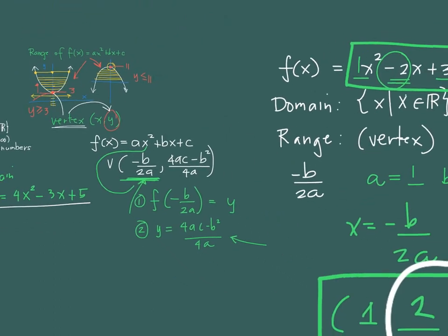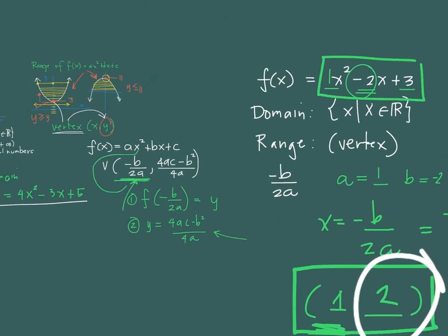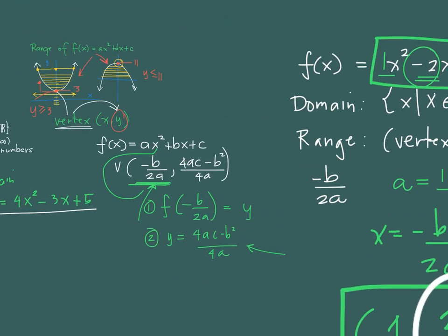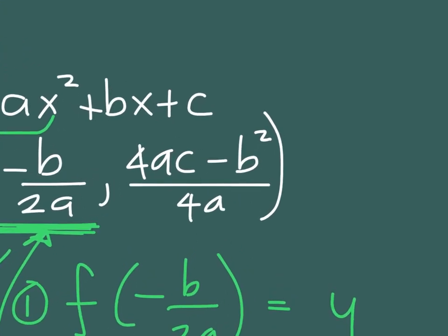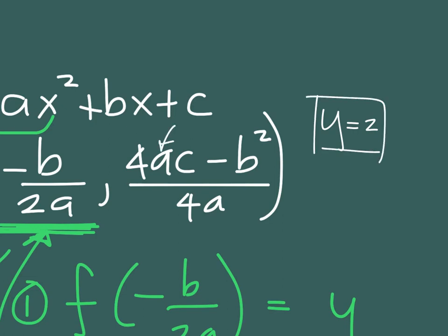If you want to memorize the direct formula, the y-value we obtained as 2 can be found immediately by supplying a, c, b, and a into 4ac minus b squared over 4a. I'll be leaving that as an exercise for you to verify.